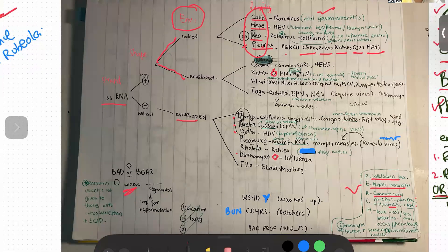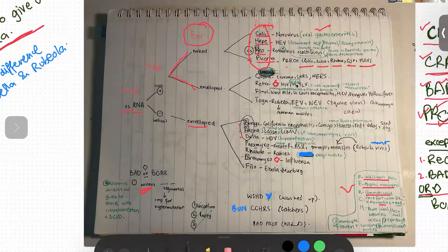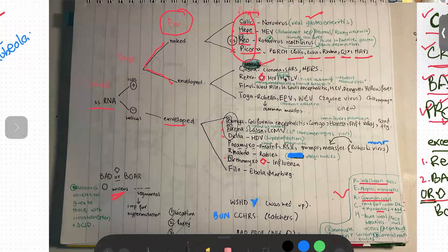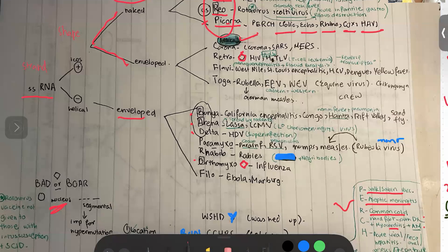Now the party viruses — the crafty group. Corona is an exception because it's a helical virus; all others are icosahedral and positive. Corona is further divided into Corona, SARS, and MERS. The Retroviruses replicate in the nucleus, as signified by the diamond. They further include HIV, which causes AIDS, and HTLV, which causes T-cell leukemia and has a reverse transcriptase.